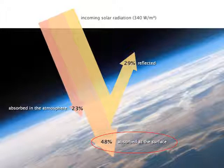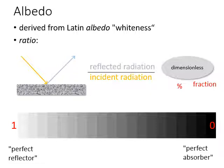Let's work out this energy budget in actual numbers. About 48% of the incoming solar radiation is absorbed by the land surface. About 30% is reflected immediately back into outer space, and about 20% is absorbed in the atmosphere. What controls how much energy gets absorbed and how much gets reflected?